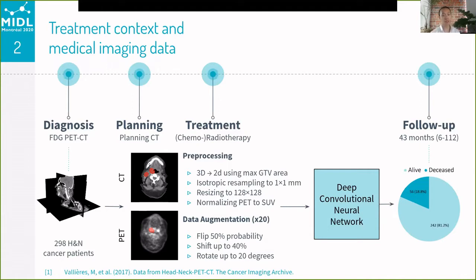From each of these modalities, the 2D slices were extracted using the GTV with the largest surface area. In terms of pre-processing, isotropic resampling, image resizing, and normalization were performed. To increase the effective dataset size, we also performed data augmentation. The classification task was binary survival outcome prediction at the end of the follow-up period.